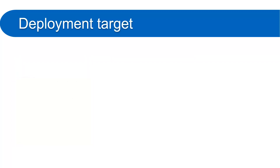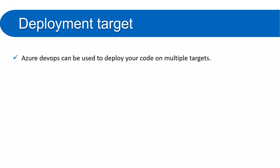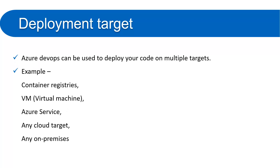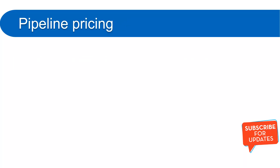Deployment target means the location of the server where you will be deploying your code. Azure DevOps can be used to deploy your code on multiple targets: containers, virtual machines, Azure services (if you have an Azure account), any other cloud target available in the market, or on-premises if you have your own server setup. Azure Pipelines provides a complete package to fetch code from any supported repository and deploy to any available server.